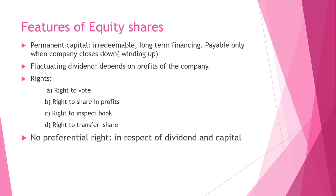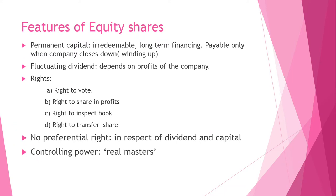Equity shares have no preferential rights in respect of dividend and capital. Whenever the company earns profits, these shareholders get the dividend, but they do not have preference in repayment of capital. Controlling Powers — these shareholders are known as the real masters because they remain with the company during its highs and lows. They decide the fate of the company; it is said that equity shareholders can make or break the company.